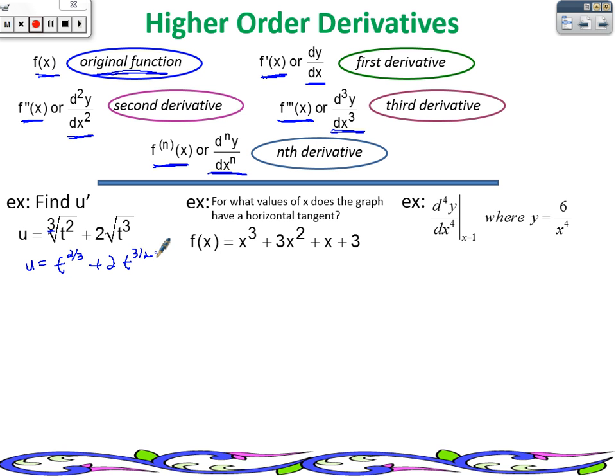Plus 2t to the 3/2. Alright, so now let's use our power rule. So u prime is going to be 2/3 t to the negative 1/3. Plus,